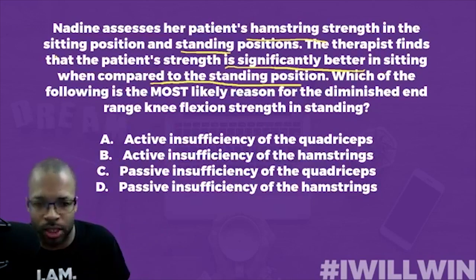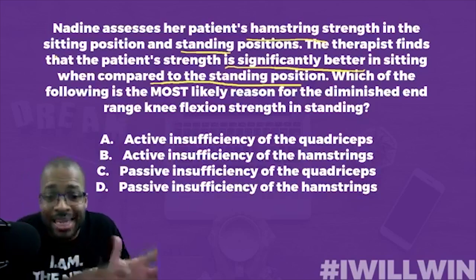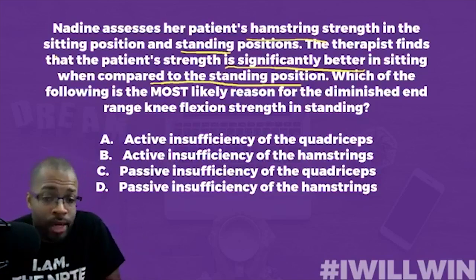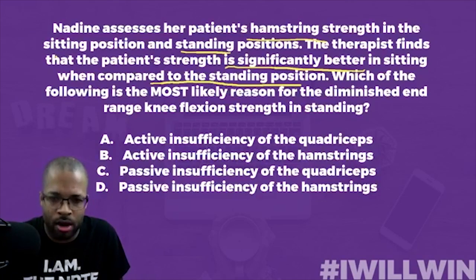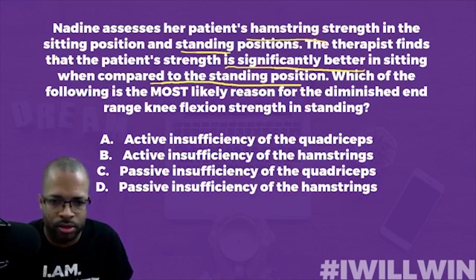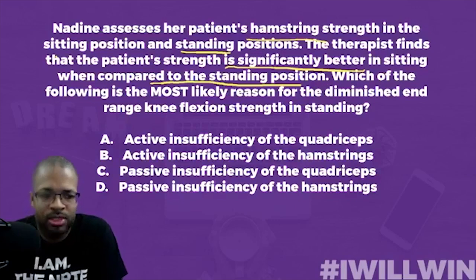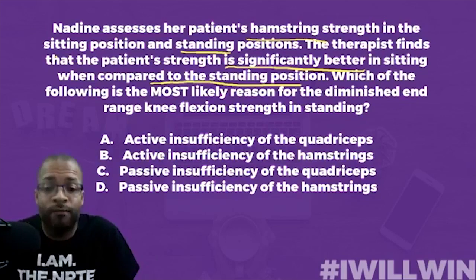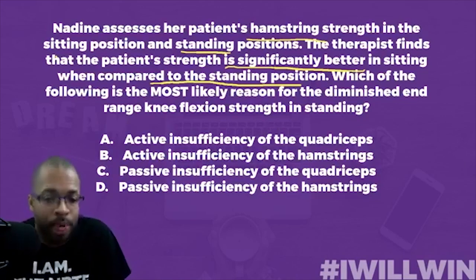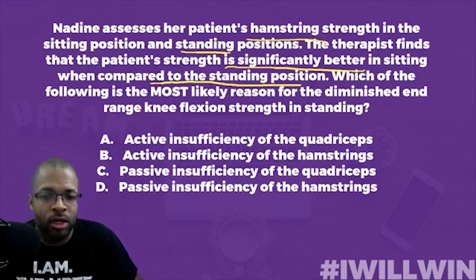Passive insufficiency is the inability of a two-joint muscle — hamstrings, quads, gastrocs, long head of biceps — to lengthen far enough to allow full range of motion. So passive insufficiency: the inability of a two-joint muscle to lengthen far enough to allow for full range of motion. Those are the two definitions you need to know.